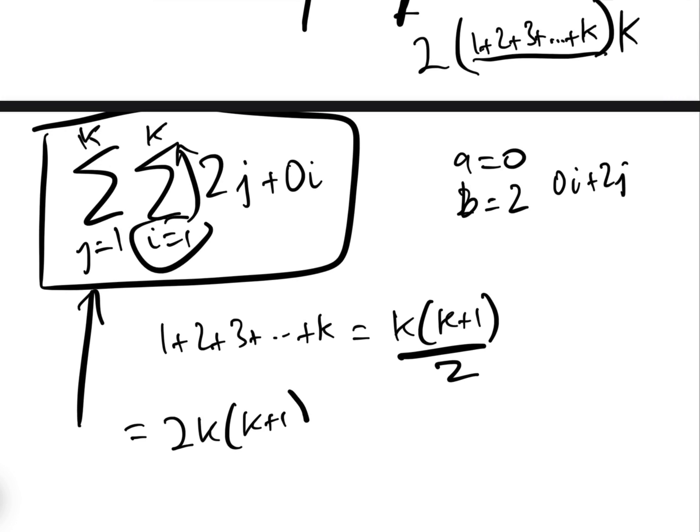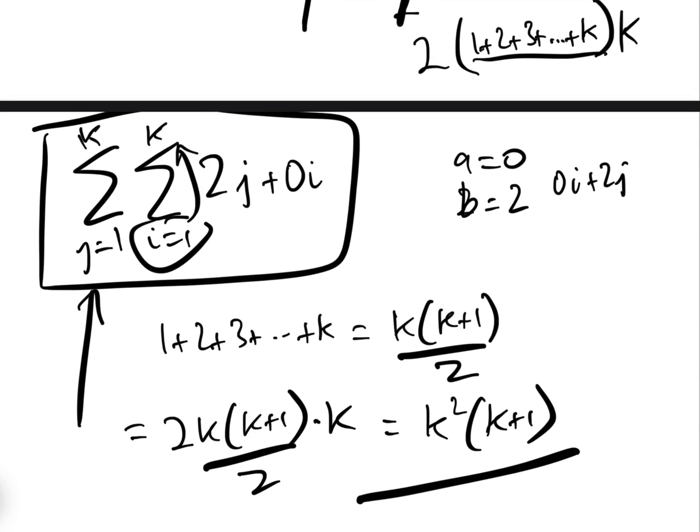Since a equals zero we ignore that term, leaving b equals two times the sum of j from one to k, times the number of iterations of i which is k. The sum of one to k is k(k+1)/2, so the answer is two times k(k+1)/2 times k, which equals k²(k+1). Even though the original question is relatively simple, expanding to ai plus bj plus ck gives you a very easy formula for these double summations. I hope you found this useful — please subscribe to the Agressy Academy YouTube channel.